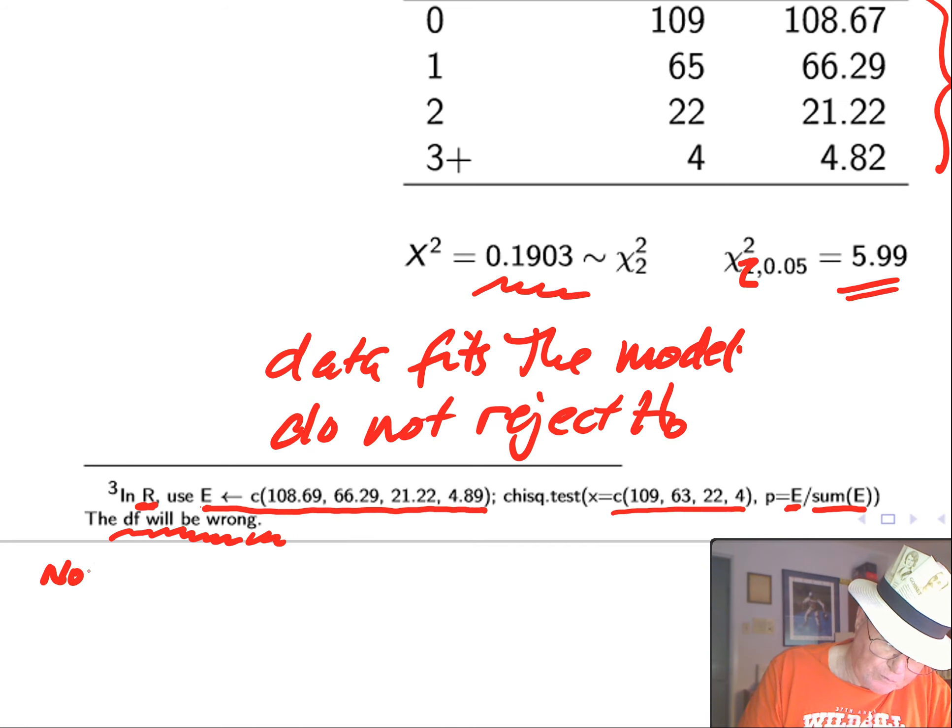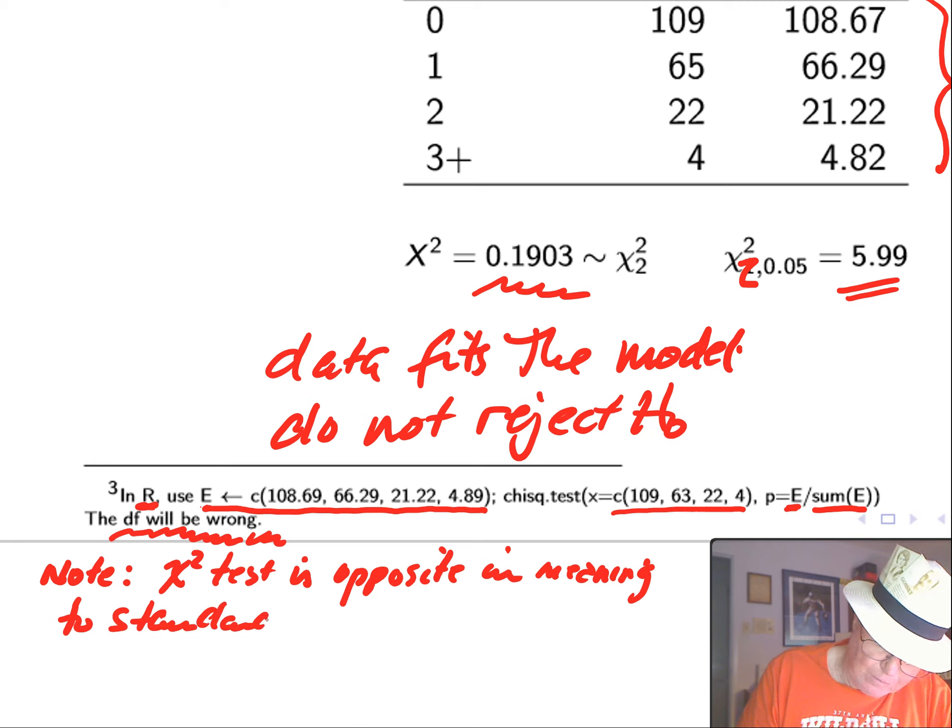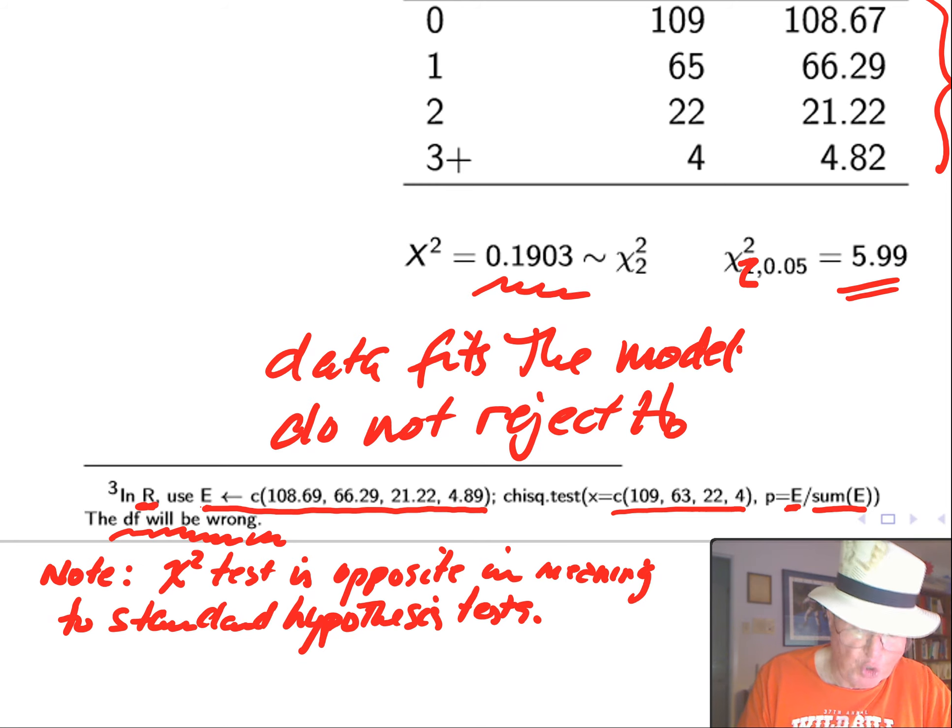Now, there is a note. Chi-square test is opposite in meaning to standard hypothesis tests. So, usually, the only time we get a strong result is when we reject the null with strong evidence. However, practitioners use the chi-square to test goodness of fit. This is opposite in nature. That is, they want to not reject the null. Very, very strict interpretationalist statisticians don't think this is correct, but the rest of the world doesn't care. In other words, statisticians suck it up.